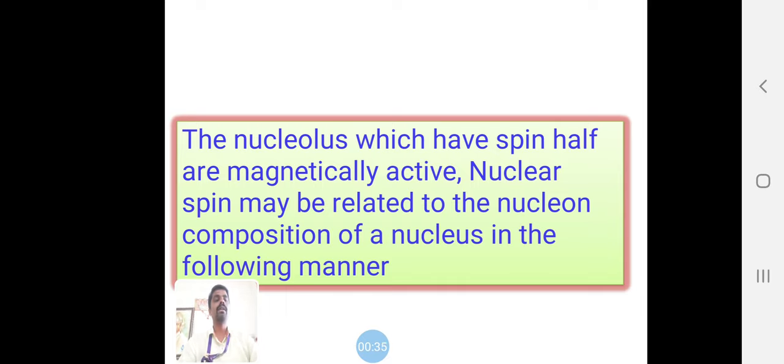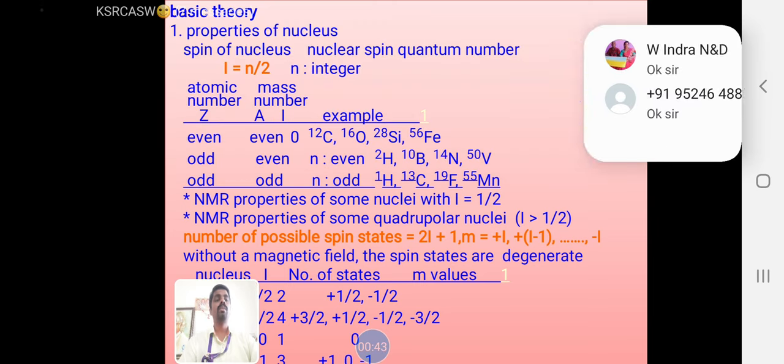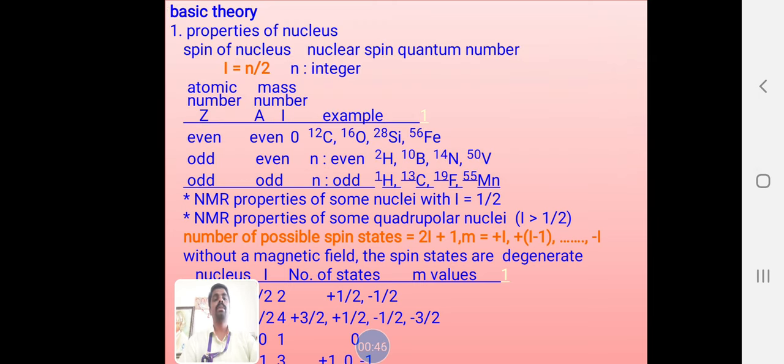We have many quantum numbers like spin quantum number, principal quantum number, azimuthal quantum number. Here we are focusing on the nuclear spin quantum number, that is I equal to n by 2. Based on the atomic number and mass, we can calculate I, the spin quantum number.